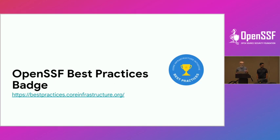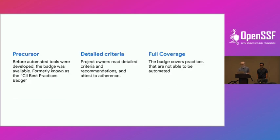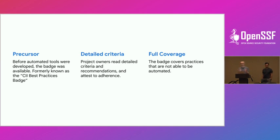Before we talk about automated ways to judge security and trustworthiness, we should talk about previous techniques — before automation — and that is the OpenSSF Best Practices Badge, formerly known as the CII Best Practices Badge. It predates OpenSSF. Since it's not an automated tool, it's text: you go and look at the requirements to meet these best practices. It's a really great authoritative resource for what you need to do to be secure, and if you attest to meeting them, you get the badge. It has full coverage because it's not limited by what can be automated.